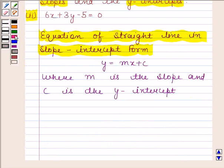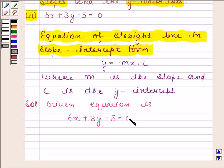Let us now begin with the solution. Given equation is 6x plus 3y minus 5 equals 0. Now, 6x plus 3y minus 5 equals 0 implies 3y equals minus 6x plus 5.